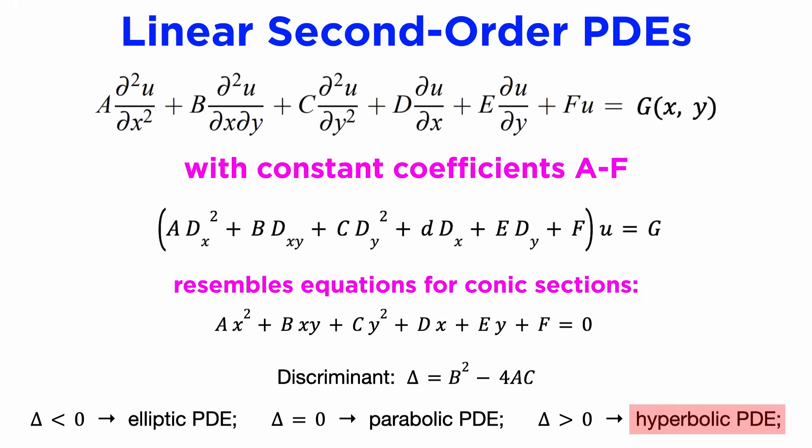For example, hyperbolic PDEs tend to have solutions with traveling waves, while elliptic PDEs have either stationary waves or no waves at all. We will see the deeper connection on why they are named after the conic sections in a later tutorial.